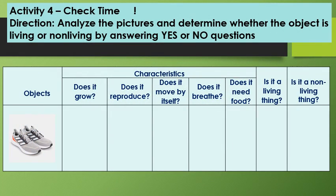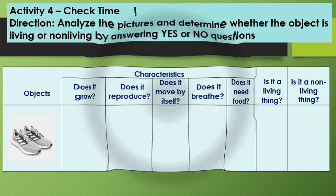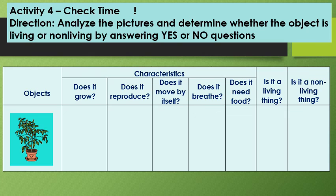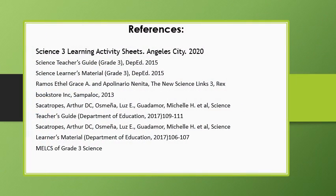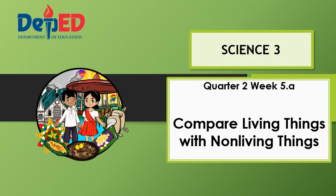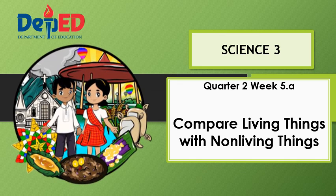Number four: Yes or no? Does it grow? Does it reproduce? Does it move by itself? Does it breathe? Does it need food? Is it a living thing? Is it a non-living thing? Number five: Yes or no? Does it grow? Does it reproduce? Does it move by itself? Does it breathe? Does it need food? Is it a living thing? Is it a non-living thing? No.